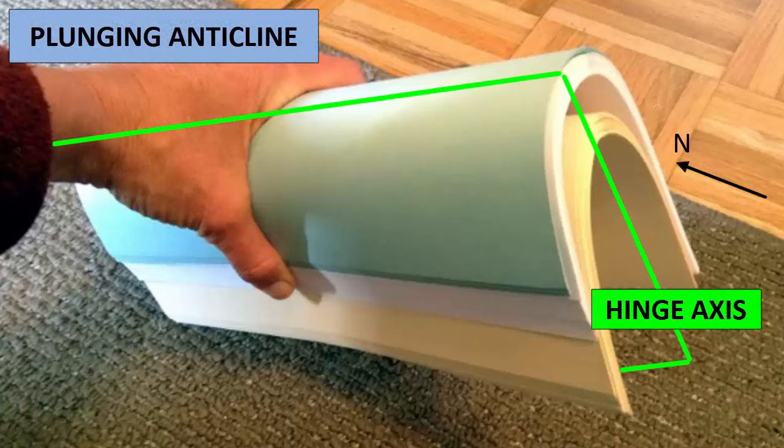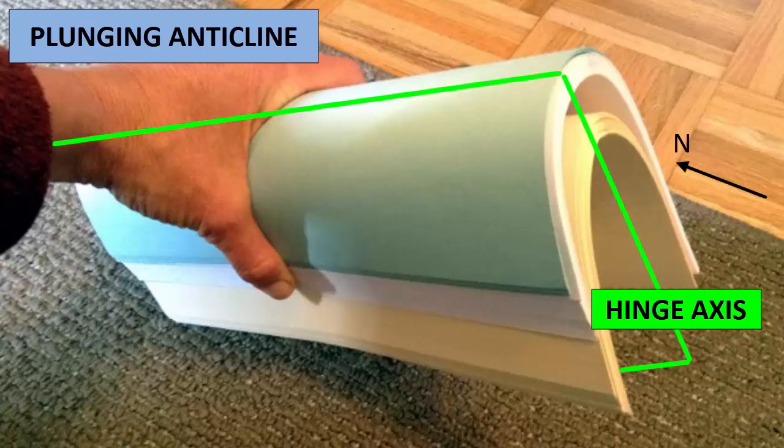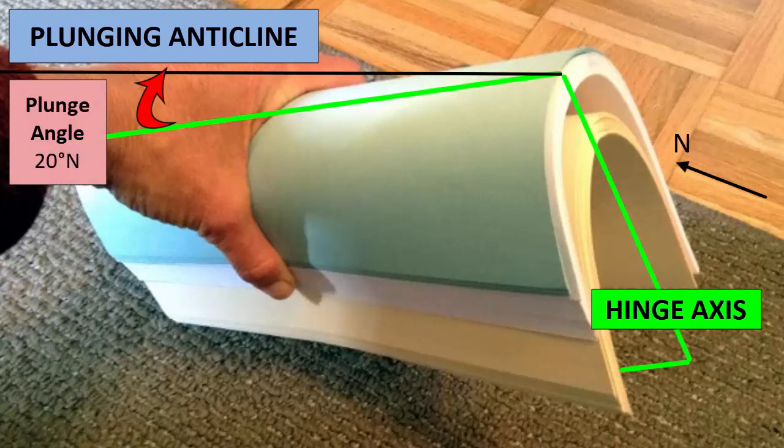A hinge axis can also plunge into the ground, which means that the strike line stays the same, but the plane dips forward or backward into the ground. Plunge is the angle between the hingeline and a horizontal line. For example, an anticline with a hingeline plunging 20 degrees north in a trend of due north would be lined up north-south and the entire structure would plunge into the ground towards the north.